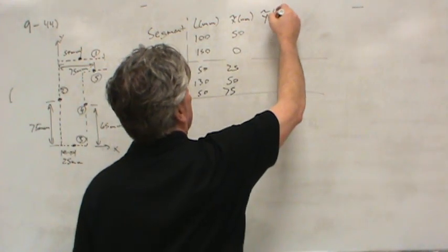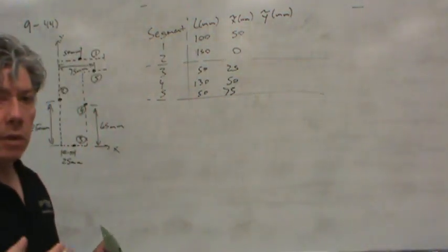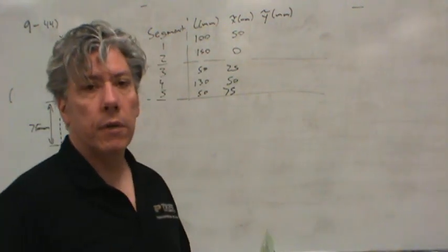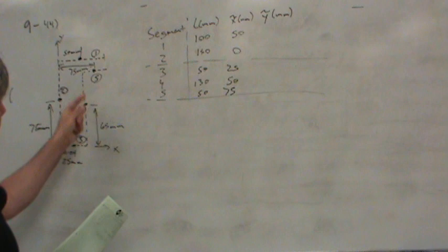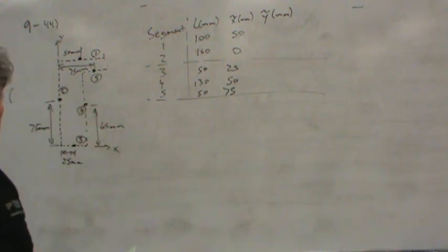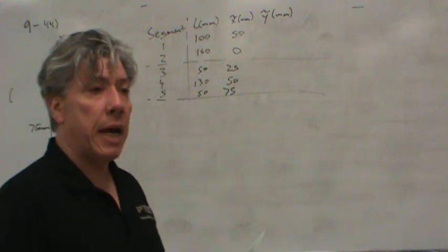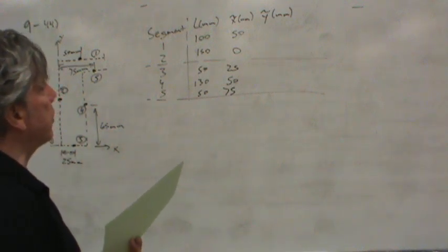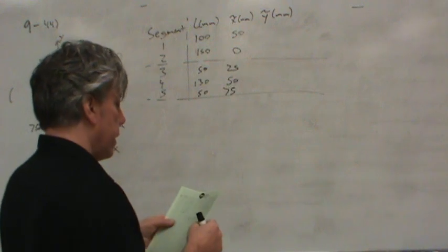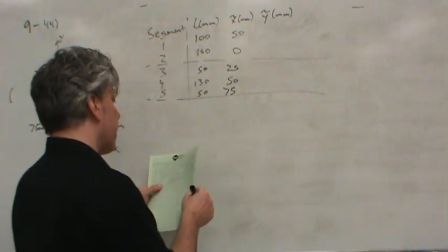Now I also need y-tilde, the centroid, because I want the centroid location of the overall wire. In other words, if I took a piece of wire and bent it this way, where would be the balance point? Where could I put my finger and it balance? Now it may not actually be on one of the wires, but that's still the balance point, it's still the centroid of that wire frame.